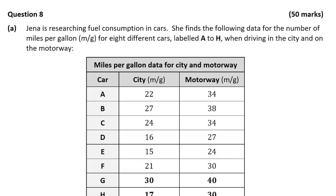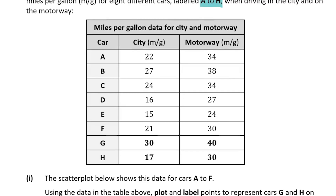We're told that Jenna is researching fuel consumption in cars and that she finds the following data for the number of miles per gallon for eight different cars, labeled A to H, when driving in the city and on the motorway. You can see the table with cars A to H and their miles per gallon fuel consumption in both the city and the motorway.